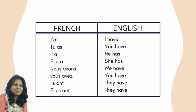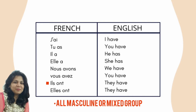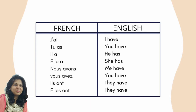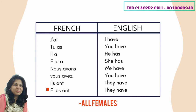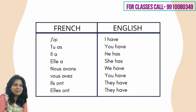As we already know, 'ils ont' is used for either all masculine, or a mixed group of males and females. And 'elles ont' is used for a group comprising of all females.